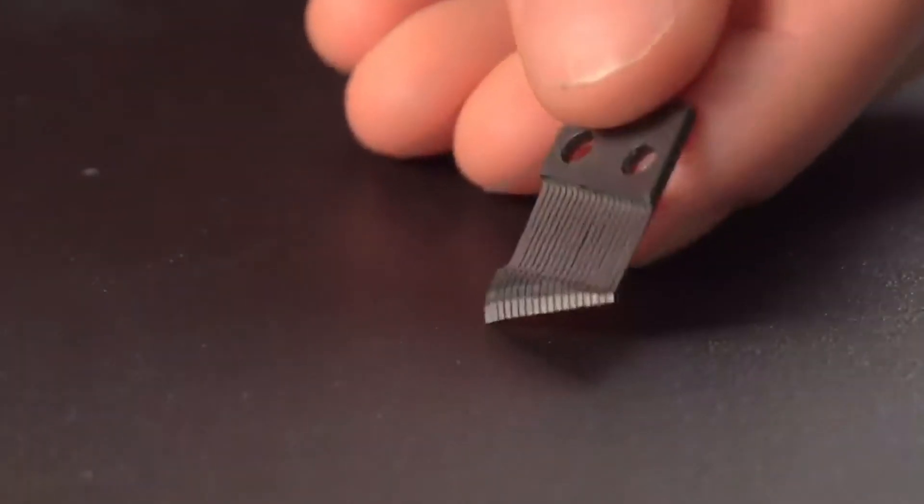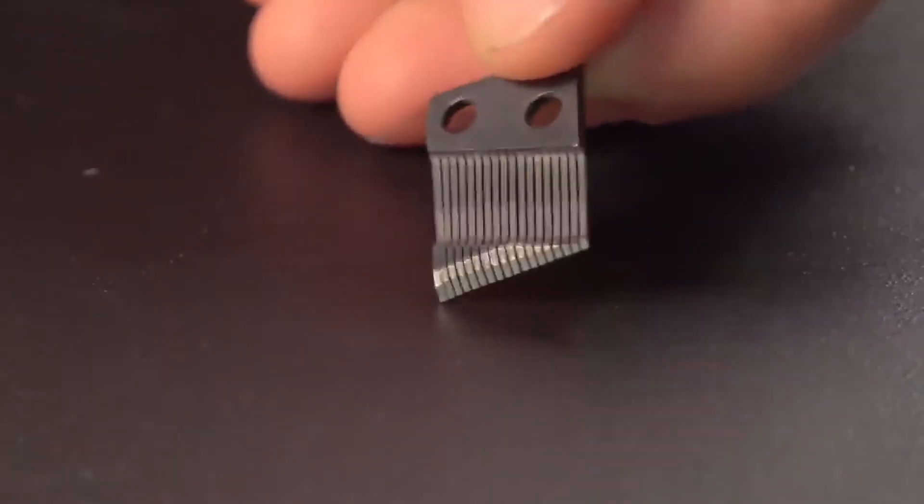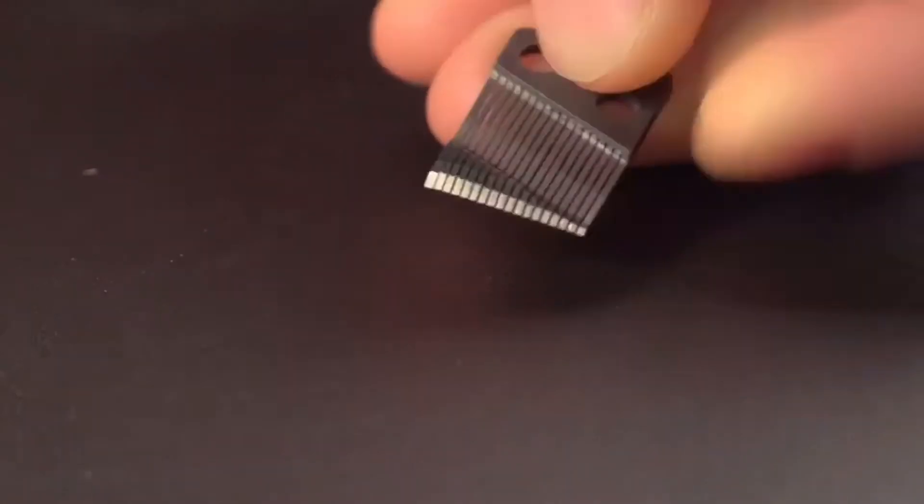Notice when you turn the comb over, the teeth don't have the same thickness. The longer teeth, the lower notes, are weighted more on the ends. This added weight lowers their resonant frequency even farther.